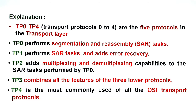TP2 handles multiplexing and demultiplexing. TP4 is the general OSI transport protocol. These five protocols are used on the transport layer. TP0 and TP2 are used with the perfect network layer, while TP1 and TP3 offer a broader load of functions.